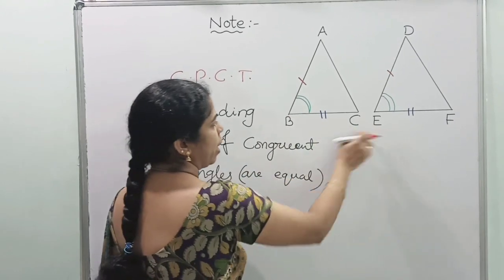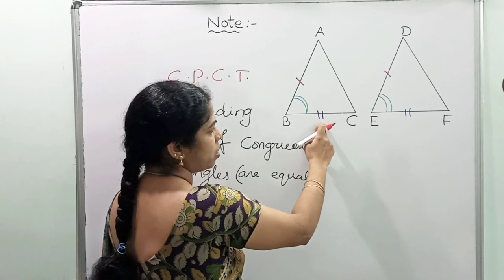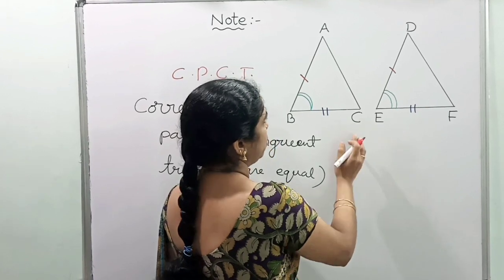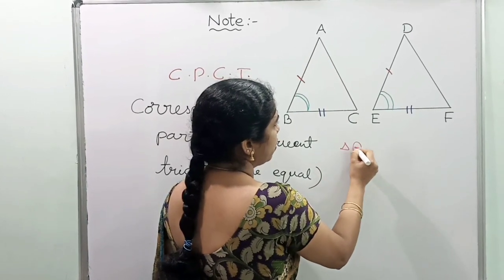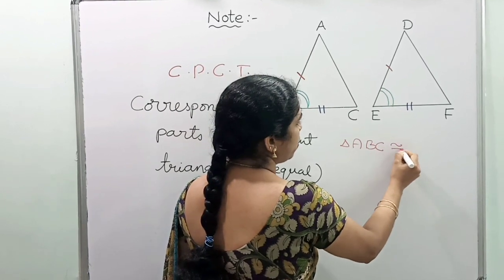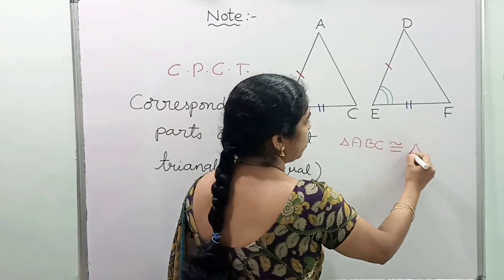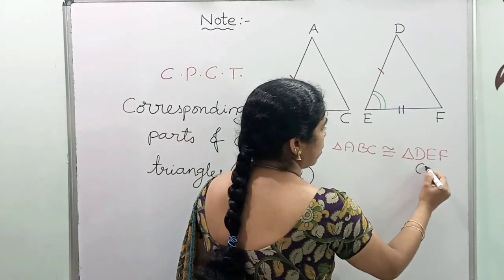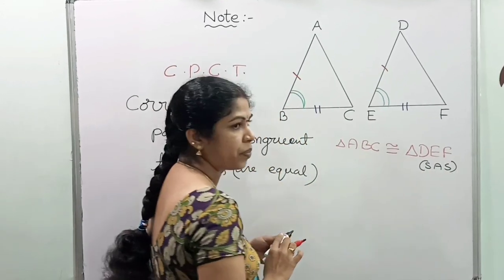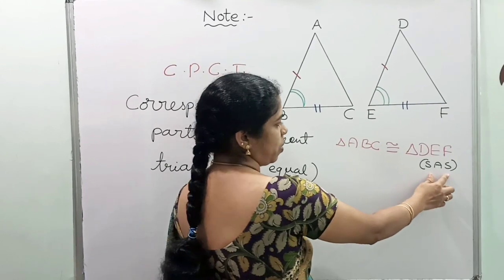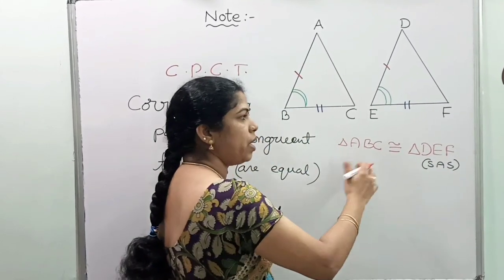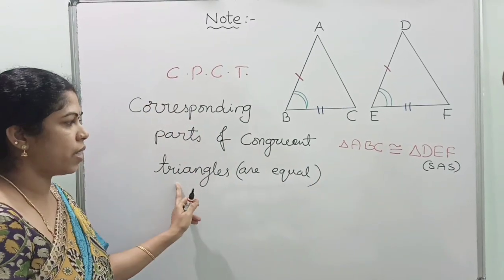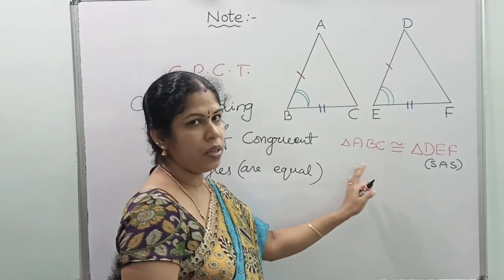If you observe these two triangles, as per SAS congruency, these two are congruent to each other, as we have seen in the previous video. Triangle ABC is congruent to triangle DEF by SAS congruency. SAS means three parts are equal. What about the remaining parts? The remaining three parts are also equal as per the corresponding parts of congruent triangles rule.